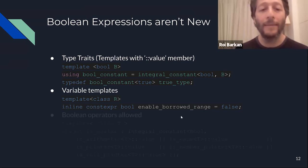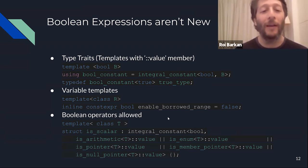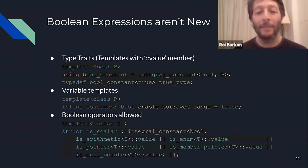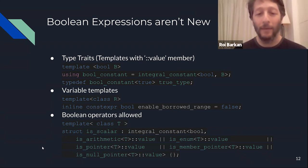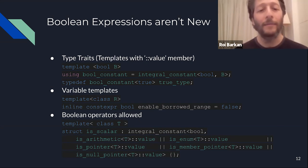There were other ways too — like Boolean operators. Here's the definition of is_scalar: it's a type trait, and we can see it's basically a Boolean expression of other traits composed together. Even before concepts, it was pretty common to have ways to convert types into Booleans.